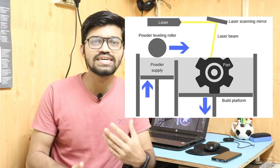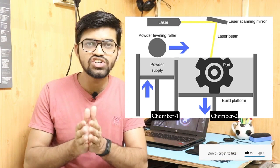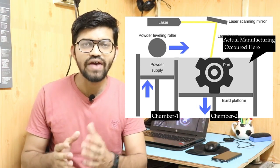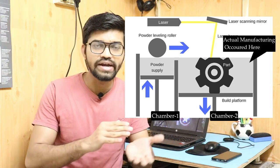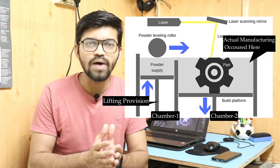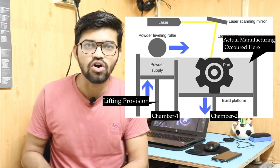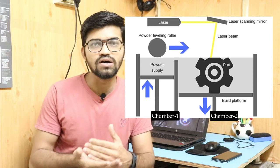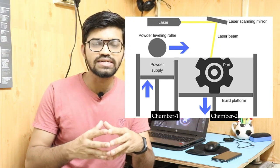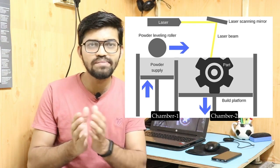In the SLS process, nylon or plastic powder is used. There are two chambers: the first chamber is filled with powder and has a lifting mechanism so the powder stock can be raised upward and transferred to the second chamber. The actual model is manufactured in the second chamber. As shown in the diagram of the SLS printer, the computer is connected to the laser, which can track accurate geometries.